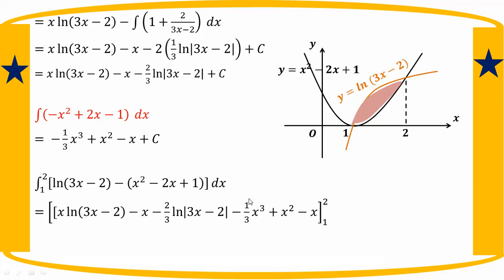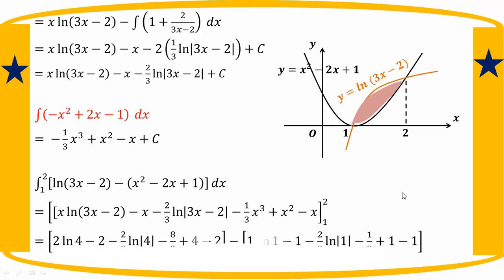Upper limit is 2, lower limit is 1. Evaluating at the upper limit: 2 times ln(2·3 minus 2), which is 2·ln(4), minus 2 by 3, minus 2. Then subtracting the lower limit evaluation: 1·ln(1·3 minus 2), which is 1·ln(1), minus 2 by 3, minus 2 minus 1 minus 3, plus 1, minus 1.